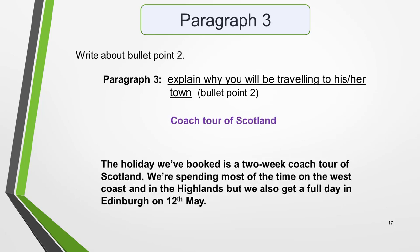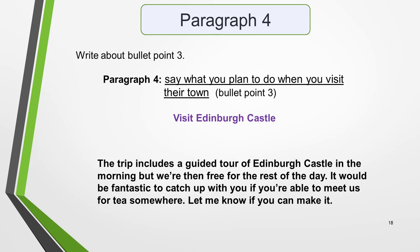The third paragraph should cover the second bullet point — to explain why you'll be travelling to his or her town. My idea was a coach tour of Scotland. You could write: 'The holiday we've booked is a two-week coach tour of Scotland. We're spending most of the time on the west coast and in the highlands, but we also get a full day in Edinburgh on the 12th of May.' Paragraph 4 addresses the third bullet point — to say what you plan to do when you visit. For example: 'The trip includes a guided tour of Edinburgh Castle in the morning, but we're then free for the rest of the day. It would be fantastic to catch up with you if you're able to meet us for tea somewhere. Let me know if you can make it.'